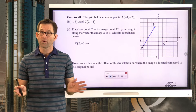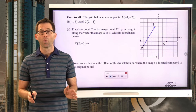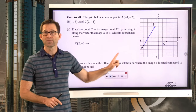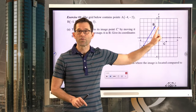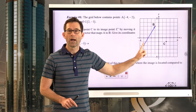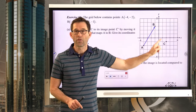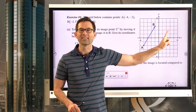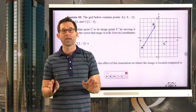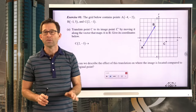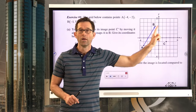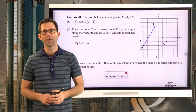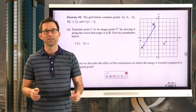We've never done a translation in the coordinate plane before, but I'd like you to take an attempt at it. The vector going from A to B describes a direction and a length. I want you to take point C and shift it exactly the same distance, exactly in the same direction — parallel to this vector. Pause the video now and see if you can figure out where point C gets mapped to.